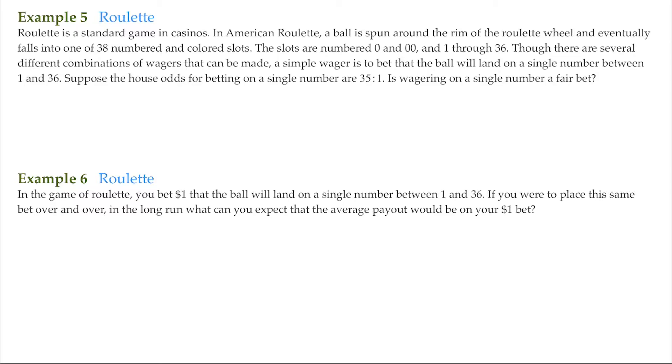The slots are numbered 0 and 00 and 1 through 36. Though there are several different combinations of wagers that can be made, a simple wager is to bet that the ball will land on a single number between 1 and 36. Suppose the house odds for betting on a single number are 35 to 1. Is wagering on a single number a fair bet?